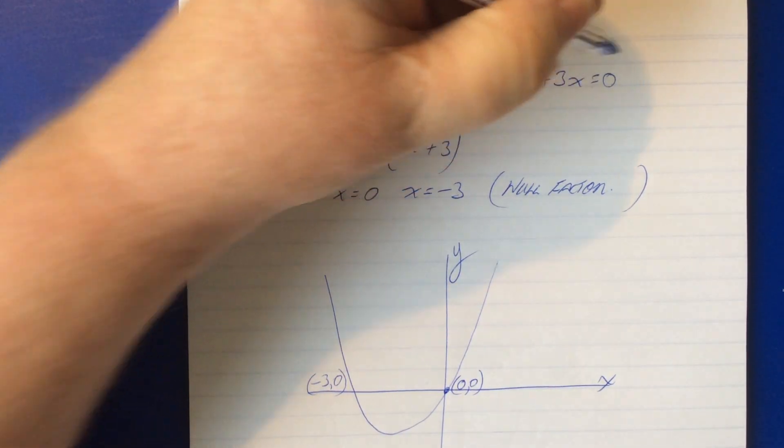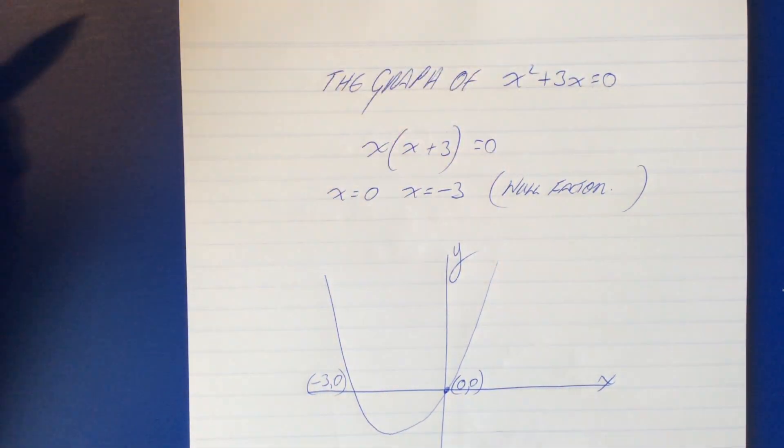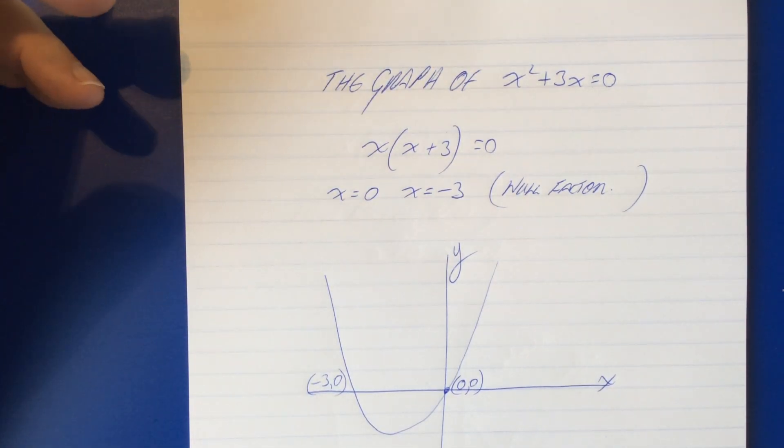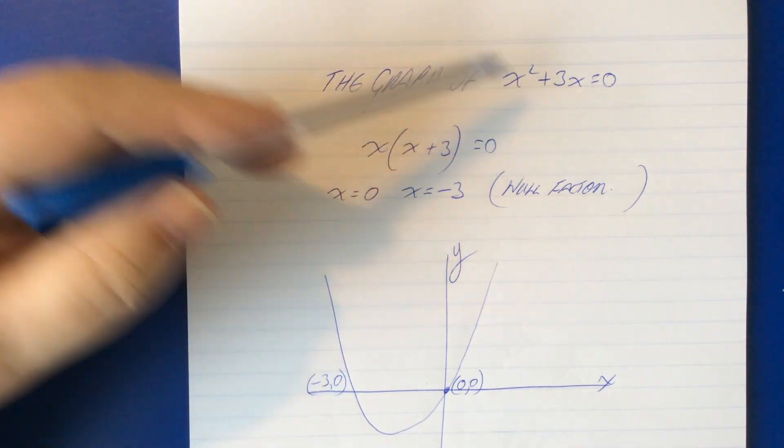We'll make that function equals zero and we'll make that equal zero just so that it's very clear what we're doing. So x squared plus 3x equals zero.